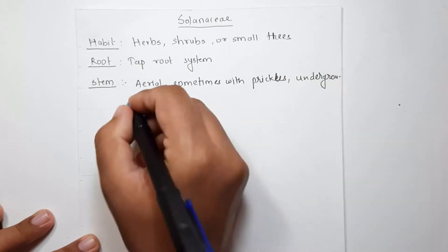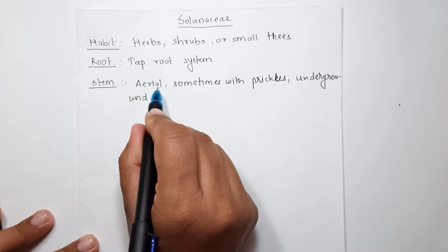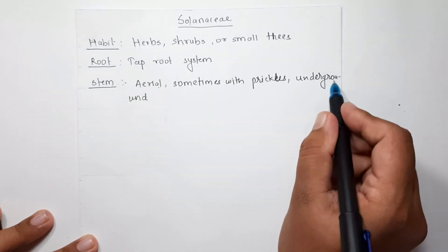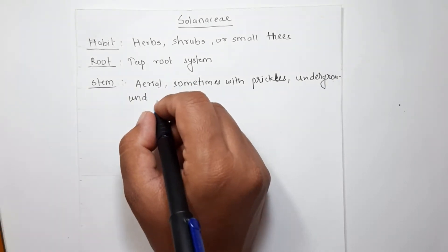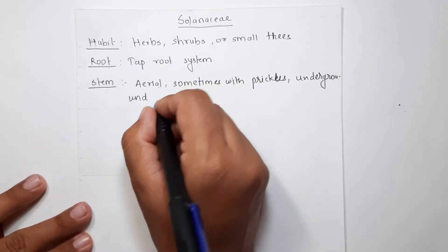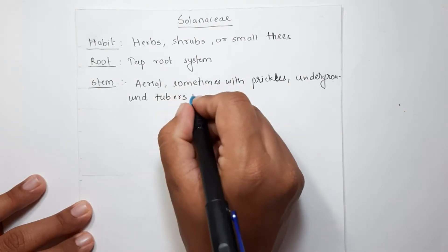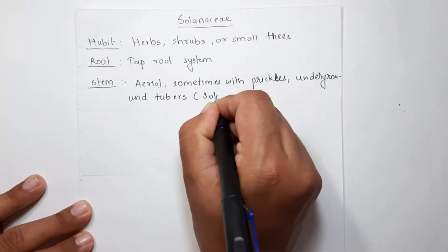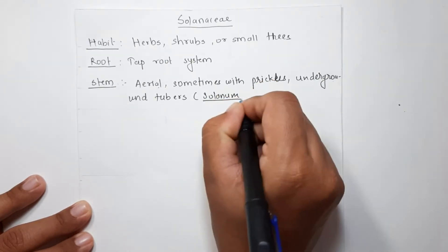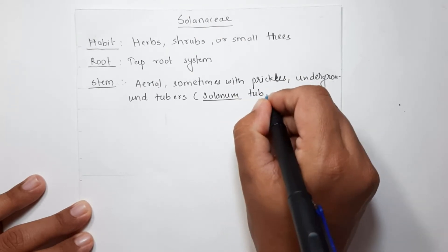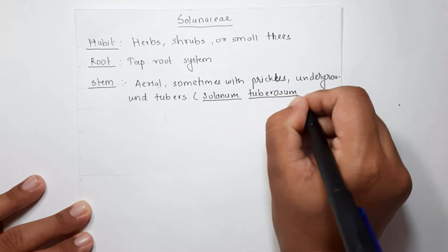The stem can be aerial or underground. Both types occur in the Solanaceae family. When it is underground, it appears as tubers. These tubers are very common in Solanum tuberosum, which is commonly called the potato plant — potatoes are nothing but the underground stem.